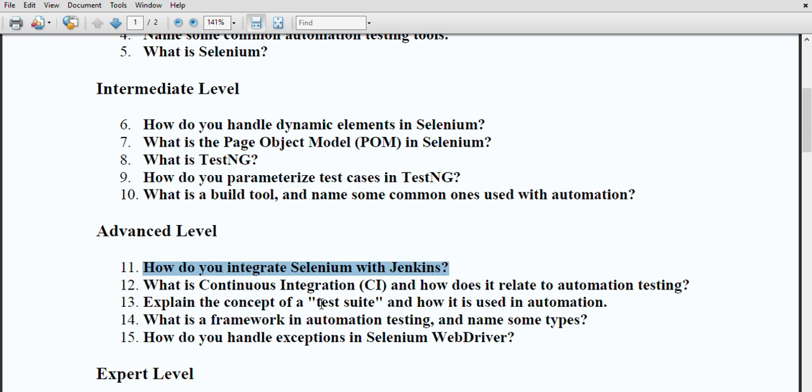What is Continuous Integration and how does it relate to automation testing? This is a mostly asked question related with CI/CD. CI is a practice where code changes are automatically built and tested frequently. Automation testing plays a very crucial role in CI by providing quick feedback on the quality of the code and automated test execution.